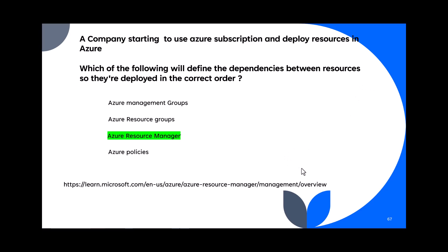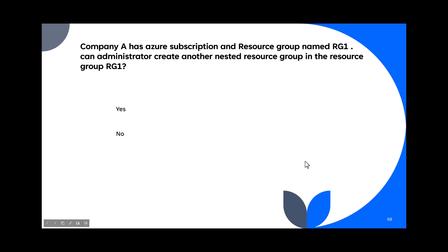Question 68: A company has an Azure subscription and a resource group named RG1. Can an administrator create another nested resource group inside RG1? No — nested resource groups are not allowed in Azure. So the answer is no.